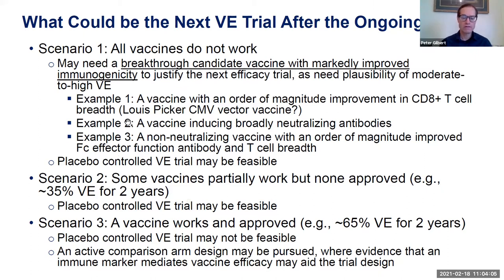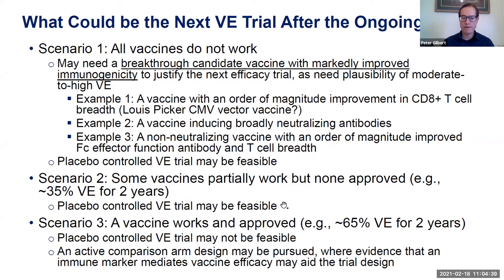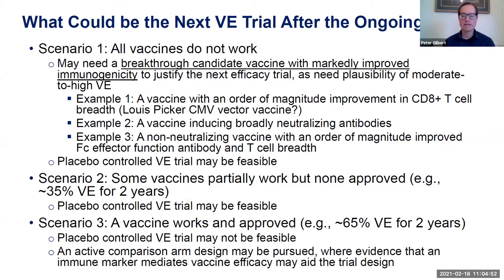As Holly has said in multiple forums, for vaccines before there are any approvals, a placebo-controlled trial is one of the potentially feasible designs, while the standard of prevention for all participants is a critical area to build up. If some vaccines work partially but not well enough to be approved, placebo-controlled VE trials in the future could be feasible. If one of the vaccines works and is approved, then in some populations a placebo-controlled trial probably wouldn't be feasible, leading to an active comparison design.